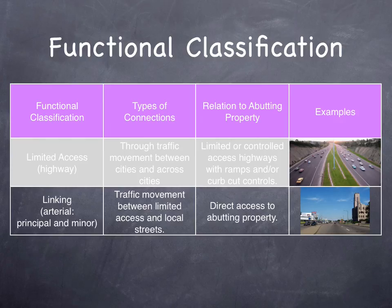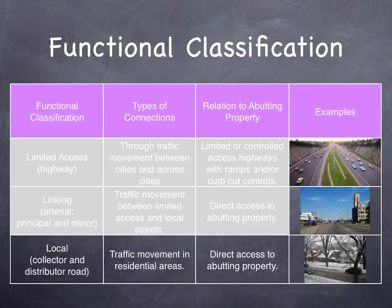The next level of the hierarchy are linking routes. These provide for traffic between limited access and local streets, and they have direct abutting access for property owners. Finally, there are local streets, collector and distributor roads, that serve primarily for traffic movement in residential areas.